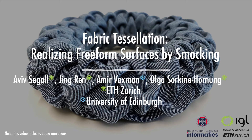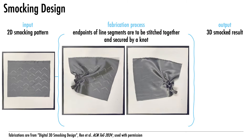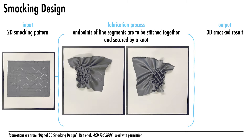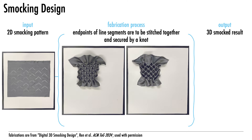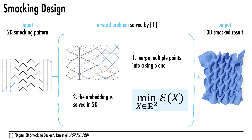In this work, we consider a fabric manipulation technique named smocking, which was originally developed to enhance the stretchability of fabric and make it more durable. Following a carefully designed pattern, the technique involves stitching several points on the backside of a flat fabric. This results in the formation of intricate and aesthetically pleasing pleats on the front side of the fabric in a rather surprising form that is hard to predict from the stitching pattern.